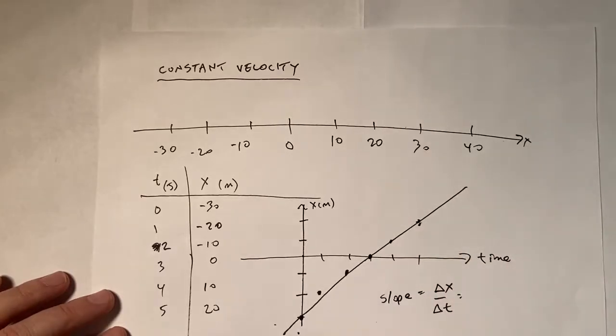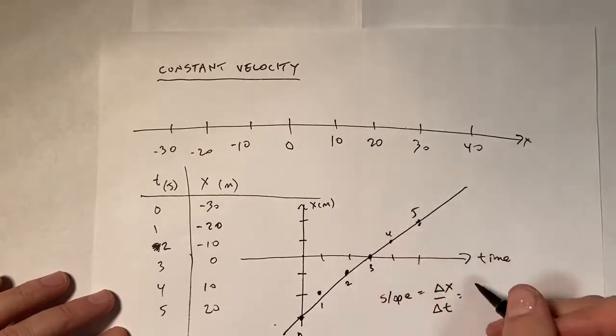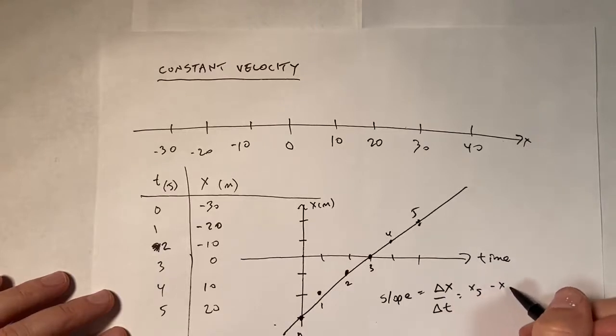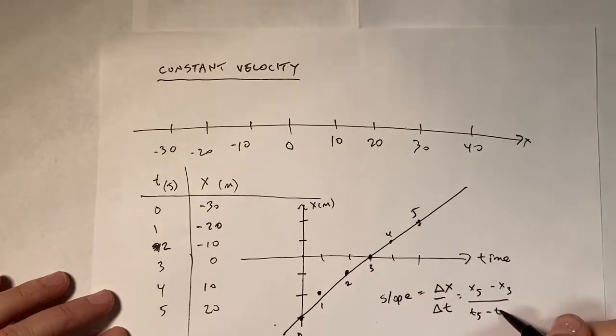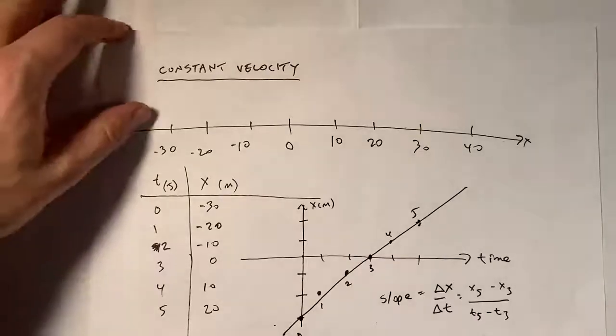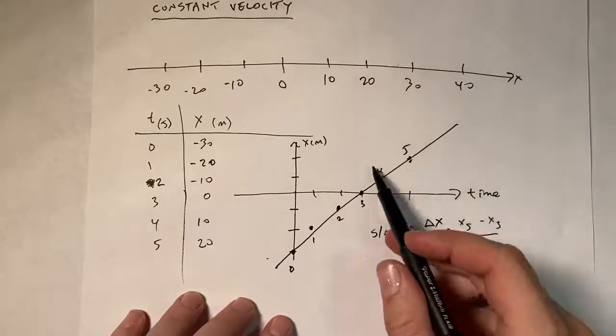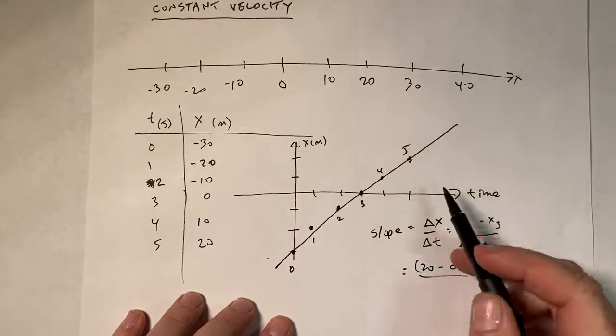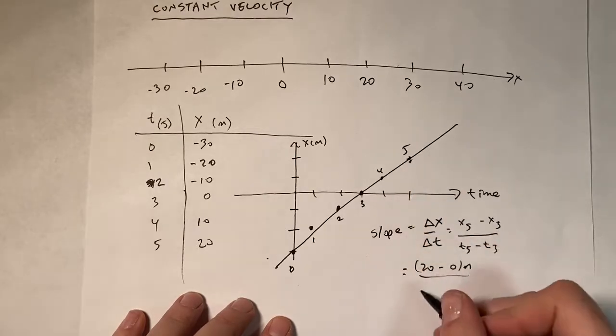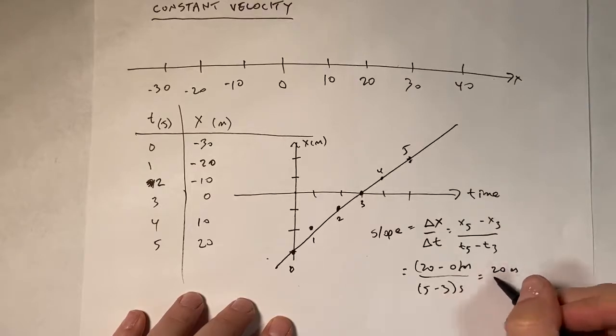So that would be, let's call this point 0, 1, 2, 3, 4, 5. And that's the time too. So it's going to be x5 minus x3 over the change in time, which is going to be t5 minus t3. Okay. So let me move the paper up a little bit. And so now I can actually calculate that. And it's going to be x5 is 20 minus 0 meters over, that's going to be 5 seconds minus 3. So it's going to be 20 meters over 2 seconds or 10 meters per second.